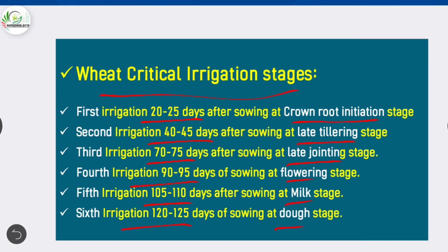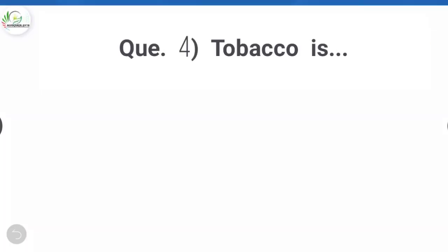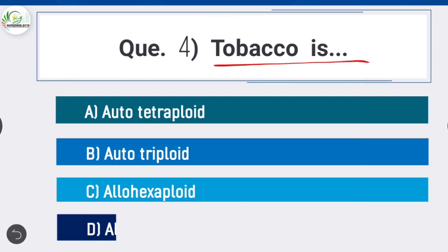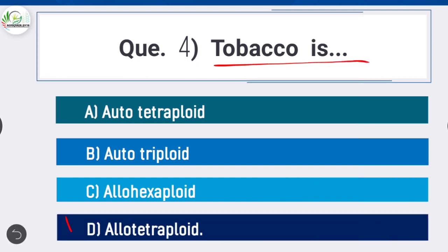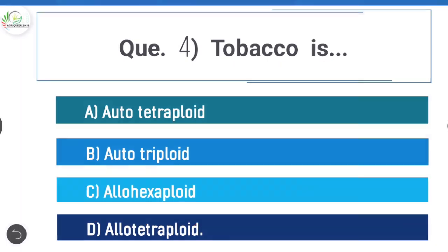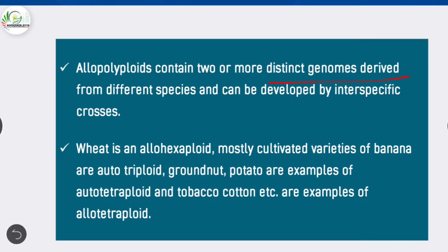Question 4: Tobacco is — option D is correct: allotetraploid. Allopolyploids contain two or more distinct genomes derived from different species and can be developed by interspecific crosses. Wheat is an allohexaploid. Mostly cultivated varieties of banana are autotriploid. Groundnut and potato are examples of autotetraploid. Tobacco and cotton are examples of allotetraploid.